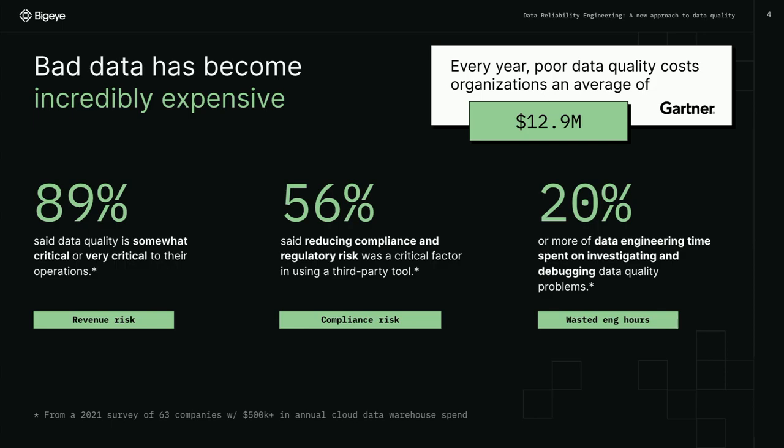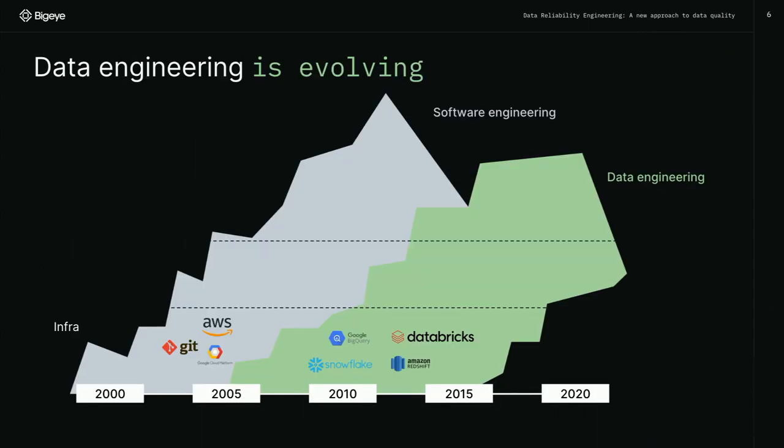Before we talk about data reliability engineering, it's important to understand why data quality is such a big problem nowadays — how did we even get here? The data ecosystem and data engineering has been evolving, mirroring the patterns we've seen in software engineering. If you think back 20 years, early 2000s, software engineering and cloud infrastructure was in its infancy. You had AWS, Git, and GCP starting up. Cloud infrastructure allowed software engineers to stop putting physical servers in racks and scale how they build software.